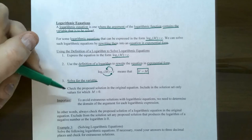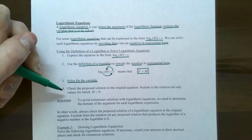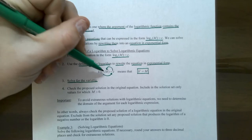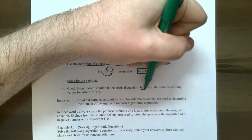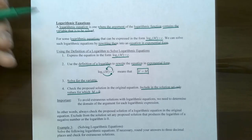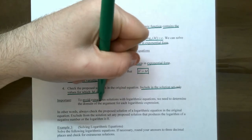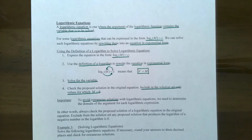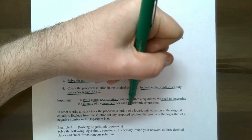One of the most important steps with logarithmic equations: notice that we did not check answers when we solved exponential equations. The reason is because exponential equations have a domain of all real numbers. For logarithmic functions, you need to find out what will make the argument only positive. So the solution set should only include values where m is greater than zero. You have to check your answer with the original equation to avoid extraneous solutions — those are solutions that do not check with the original equation — and you need to determine the domain of the argument for the logarithmic expression.